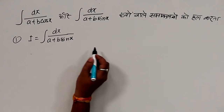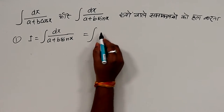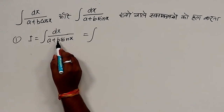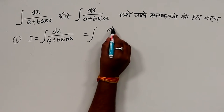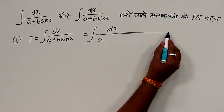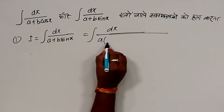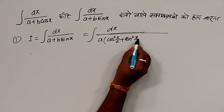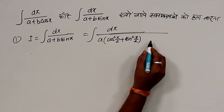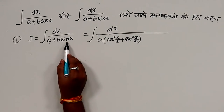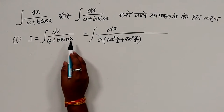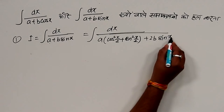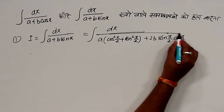अब सामने त्रिकोण में त्रिकोणमितीय सर्वसमिकाओं का उपयोग करेंगे। a के साथ 1 का गुणा है, तो उसके साथ हम गुणा कर देंगे (cos²(x/2) + sin²(x/2)) का। और sin x को हम लिख सकते हैं 2·sin(x/2)·cos(x/2), तो हम लिख रहे हैं 2b·sin(x/2)·cos(x/2)।